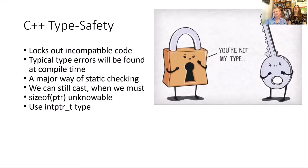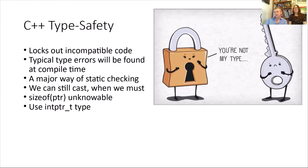C++ type safety locks out incompatible code. Typical type errors are found at compile time — a major form of static checking. We can still cast when we must size a pointer, but the size of a pointer is unknowable across platforms. Don't cast a pointer to an integer assuming they have the same size, because platform differences mean the pointer size on your development system may differ from your cross-compiled target.